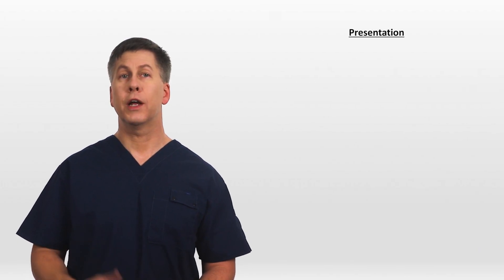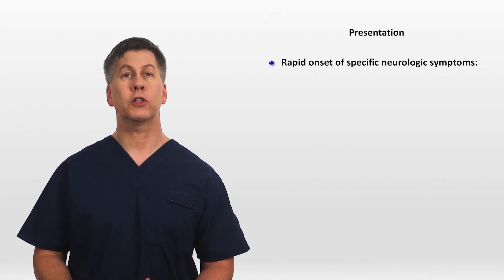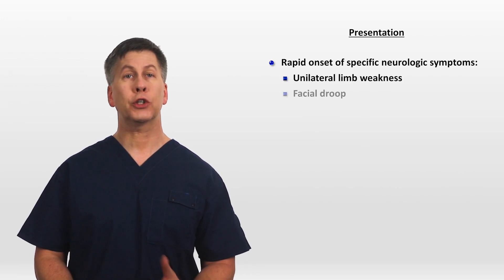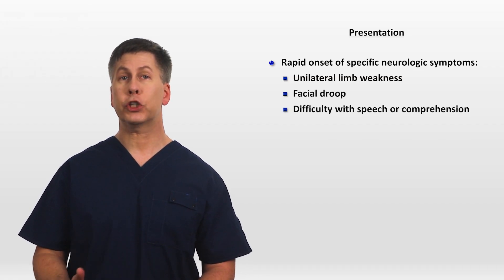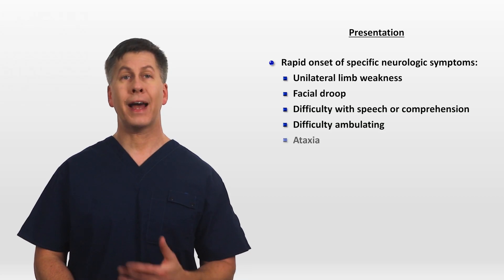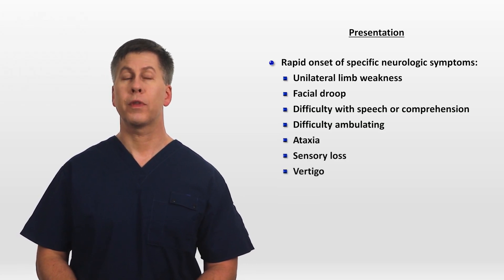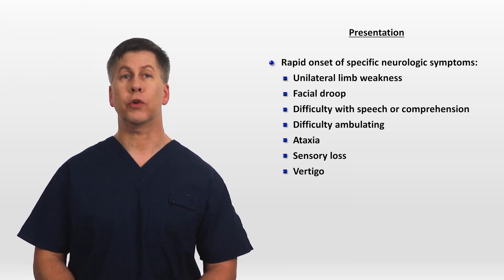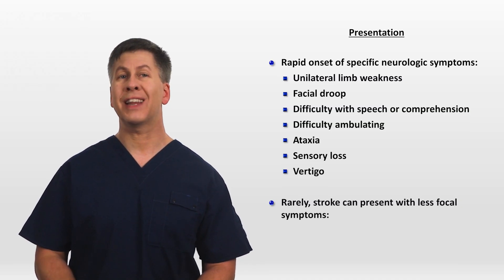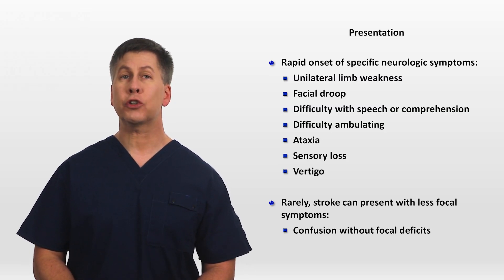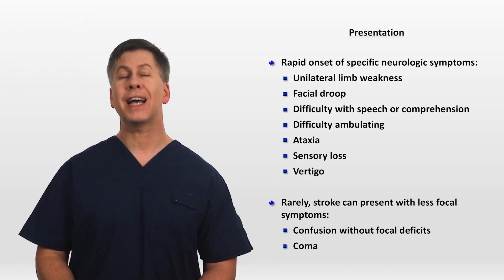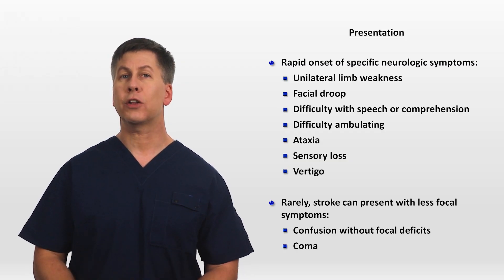Moving on to how strokes present, they most often manifest as the rapid onset of specific neurologic deficits. The specific symptoms can be unilateral limb weakness, facial droop, difficulty with speech or comprehension, difficulty ambulating, ataxia, sensory loss, or vertigo. Of these, a rapid onset of any of the first three is most predictive of the presence of a stroke. Rarely, a stroke can present with less focal symptoms, including confusion without focal deficits. Particularly profound strokes can present with coma. While strokes can cause a headache or trigger a seizure, either of these as the only manifestation of a stroke would be highly unusual.